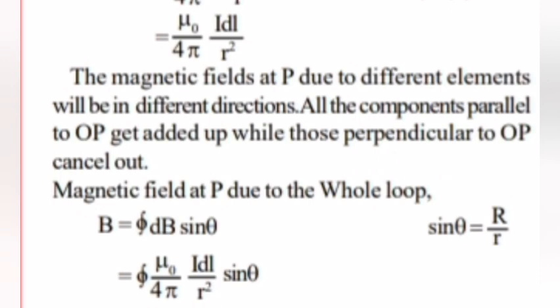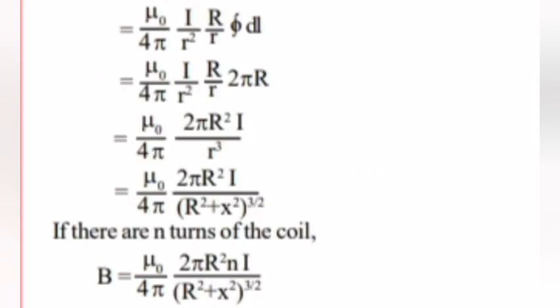Magnetic field at P due to the whole loop: B equals dB sin θ, sin θ equals capital R by small r, equals integral μ₀ by 4π idL by R² sin θ equals μ₀ by 4π i by R² capital R by small r integral dL equals μ₀ by 4π i by R² capital R by small r times 2πr equals μ₀ by 4π times 2πR² i by R³ equals μ₀ by 4π times 2πR² i by (R² plus x²) to the power 3 by 2.